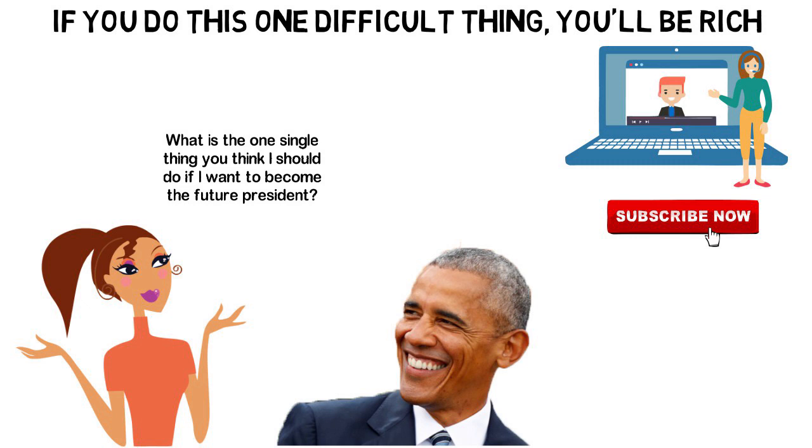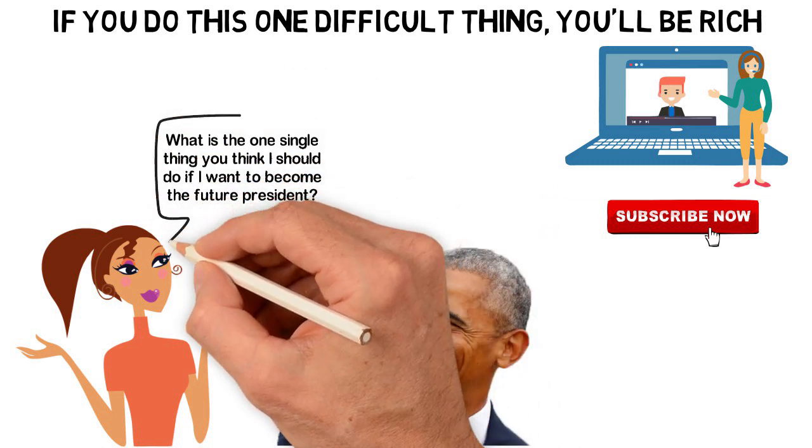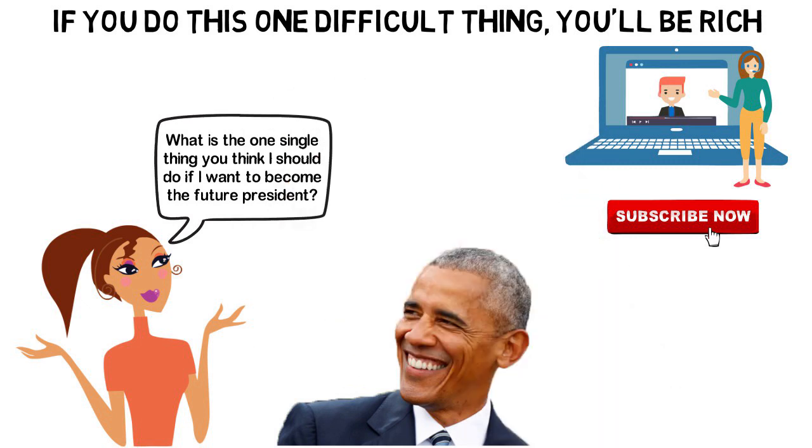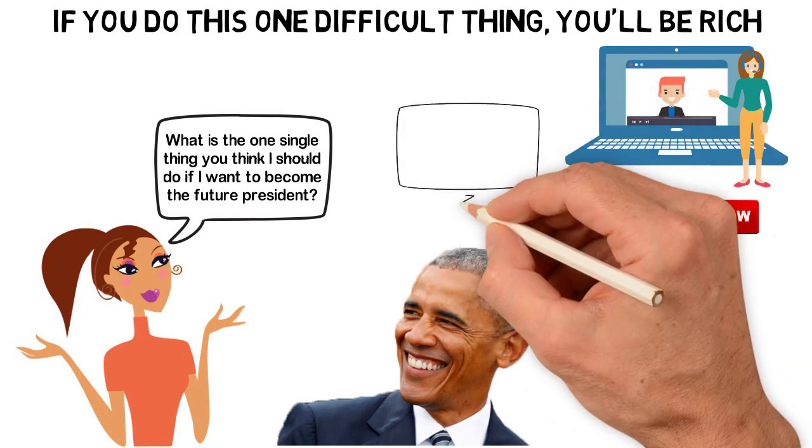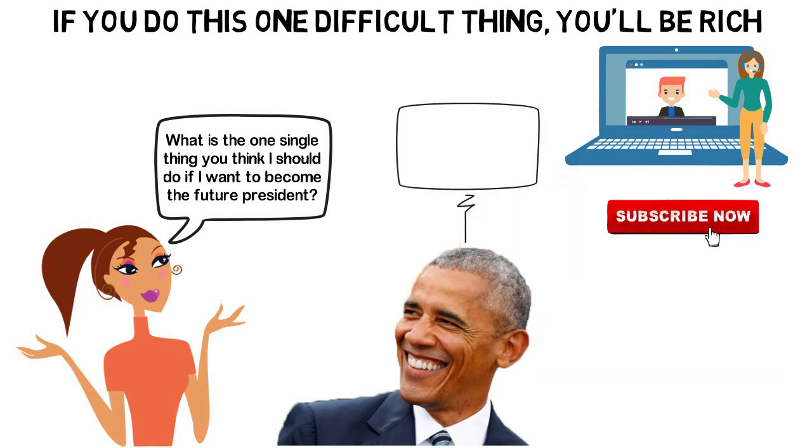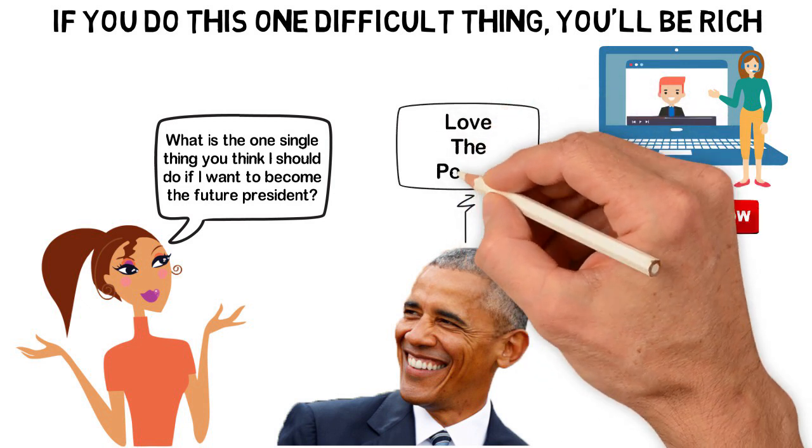Now, here's the thing. When that young girl asked Obama, what can I do if I want to become the president in the future, everyone might be expecting one complicated or scientific answer, but there was none. In fact, Obama's answer was in three simple words: love the people.